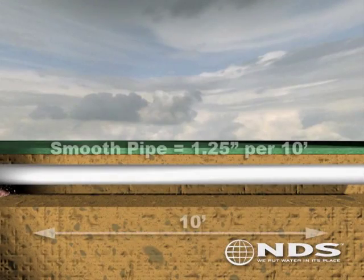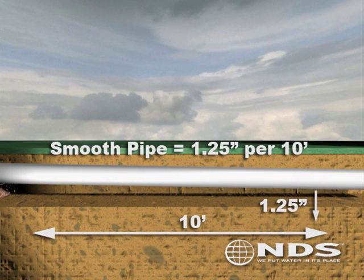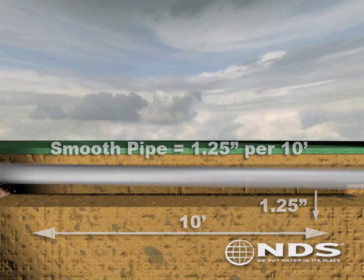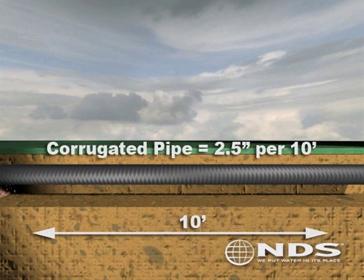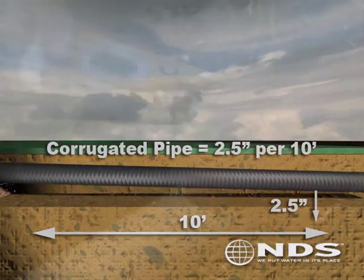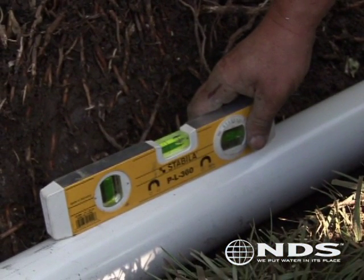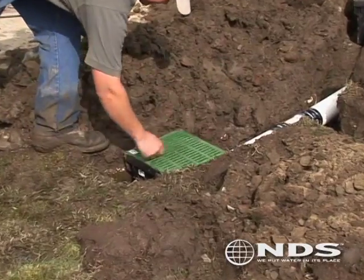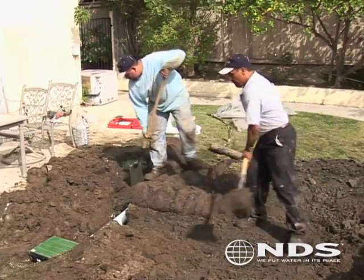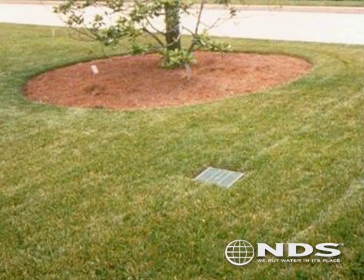Always make sure that the drain pipe is sloped properly. One and a quarter inches of slope for every ten feet is recommended for smooth wall pipe, while two and a half inches of slope for every ten feet for corrugated pipe. Use a transit or the new laser levels to ensure a proper slope is achieved. Finally, drop in a grate that blends in well with the landscape and carefully refill the hole without disrupting the slope of the pipe.